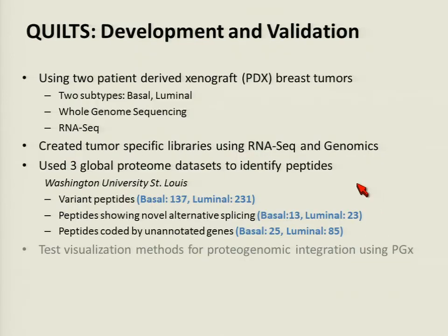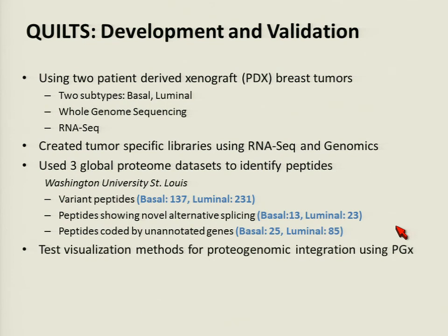From this initial analysis, we were able to identify several hundred variant peptides between the two tumor types, novel alternative splicing, as well as novel genes in both the basal and luminal tissues. We then went on to test visualization methods for proteomic integration using the PGX tool.